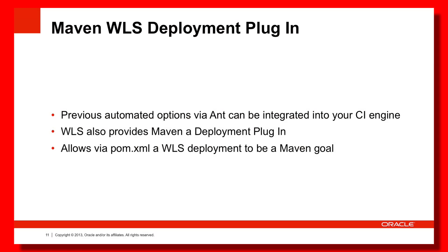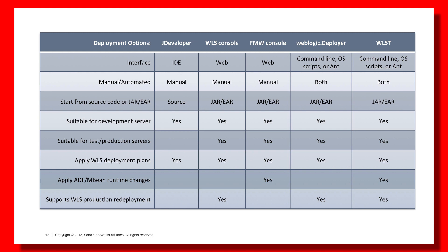The last option, only really available since JDeveloper 12c, is a Maven plugin for deploying to WebLogic server. Within your pom.xml there are a number of goals for deploying to WebLogic server, and the plugin handles all the work required. Where previously you would have relied on a continuous integration server to call Apache Ant scripts, you can now use Maven to do the same thing. A summary matrix covers all the options discussed in one page to help you quickly pick the best option for your circumstances.